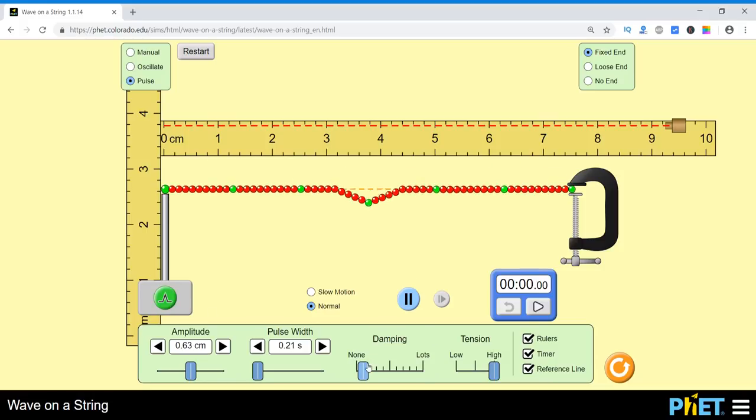If I increase the damping, you see that damping is low at this point. See the scale. And if I increase the damping, then what will happen. If I give it a pulse, then it will very soon damp. It will not oscillate.